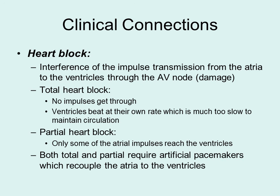In a total heart block, no impulse gets through and the ventricles start beating at their own rate, which is typically too slow. In a partial heart block, only some impulses are able to reach the ventricles. Both of these conditions require artificial pacemakers to restore a normal rhythm and ensure adequate oxygen supply to all tissues.